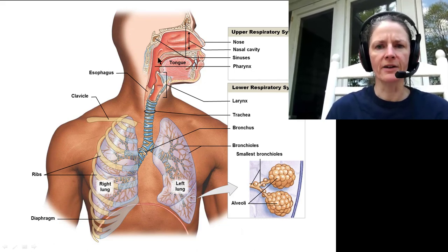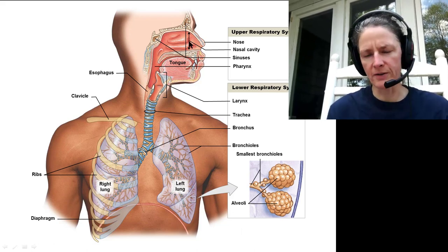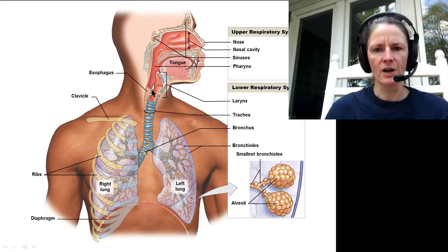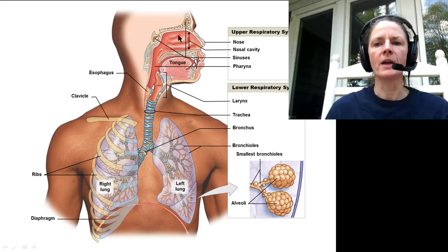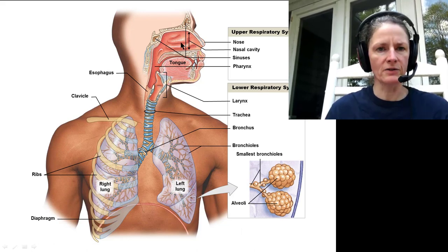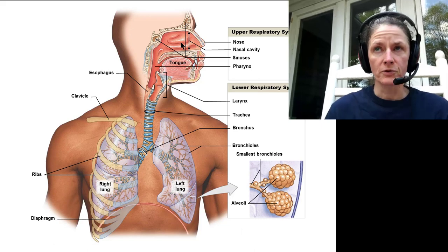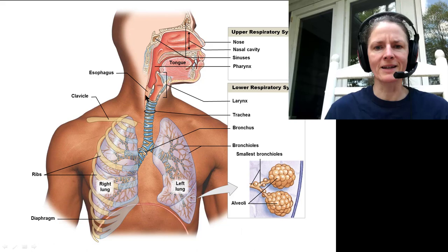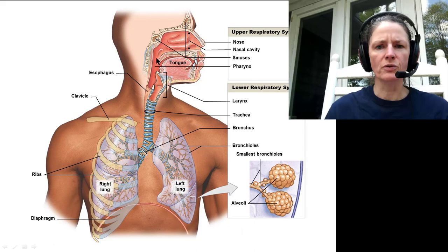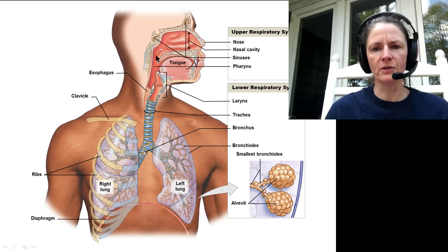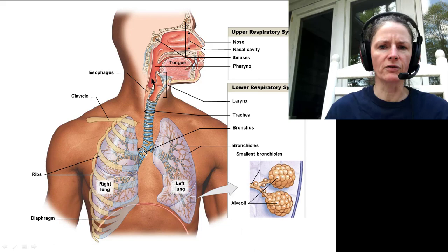Then we have our nasopharynx, and then the oropharynx and laryngopharynx. The epithelial surfaces differ depending on location. In the nasal cavity and nasopharynx, it's pseudostratified ciliated columnar epithelium — seen again in the trachea and larger bronchi. In the oro- and laryngopharynx, we transition to stratified squamous epithelium because foods and materials also pass through here, requiring protection from abrasion and chemical irritants.